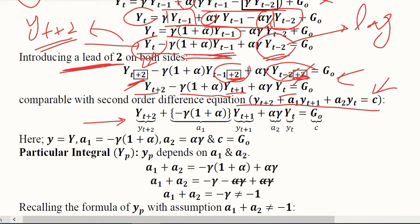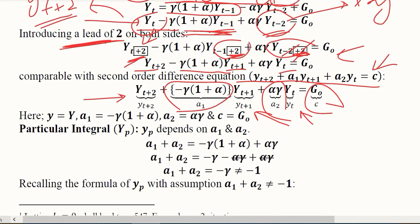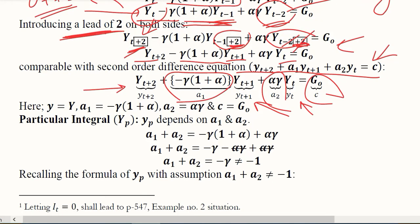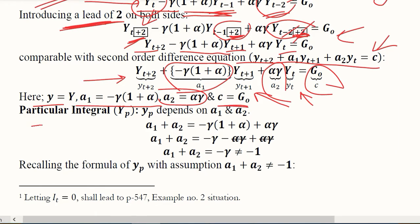Comparing it and extracting the values: YT plus 2, YT plus 1, YT are the three versions of the variable. This is the value of A1, this is the value of A2, and this is the value of c. In place of small y we have capital Y. The particular integral can be easily calculated using the formula.